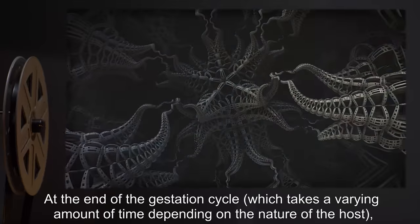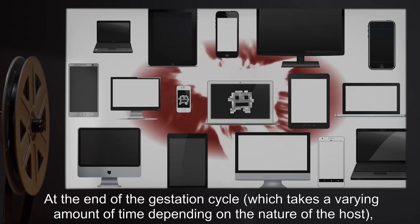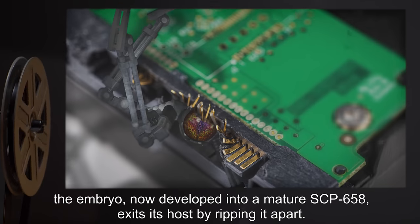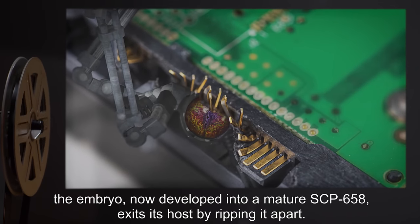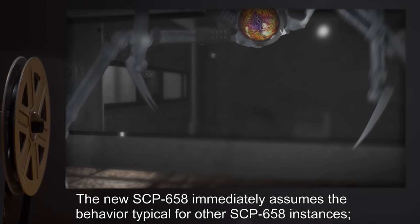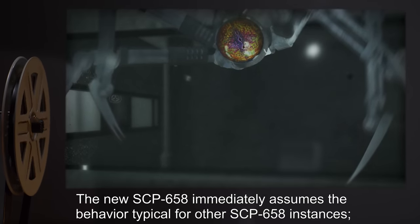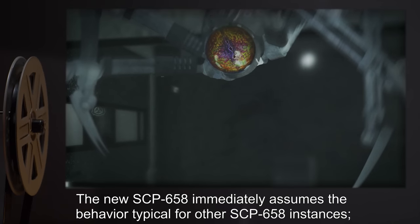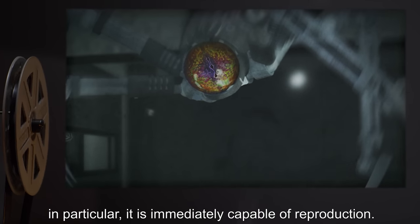At the end of the gestation cycle, which takes a varying amount of time depending on the nature of the host, the embryo, now developed into a mature SCP-658, exits its host by ripping it apart. The new SCP-658 immediately assumes the behavior typical for other SCP-658 instances. In particular, it is immediately capable of reproduction.